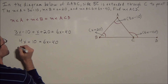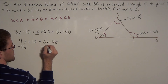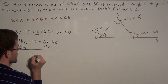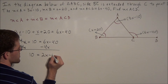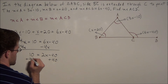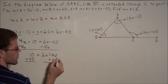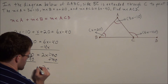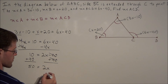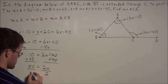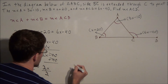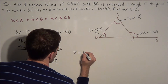To solve for x, we subtract 4x from both sides. 4x minus 4x cancels, giving us 10 equals 2x minus 40. Next, we add 40 to both sides — minus 40 plus 40 cancels — so 2x equals 50. Dividing both sides by 2, we get x equals 25.